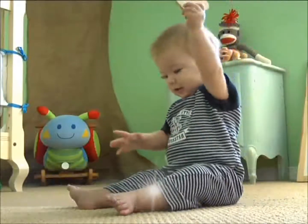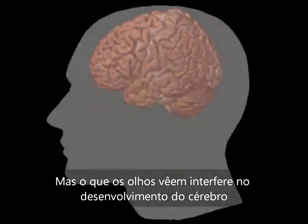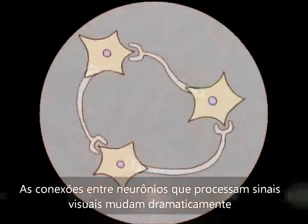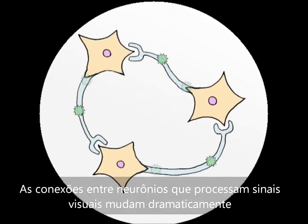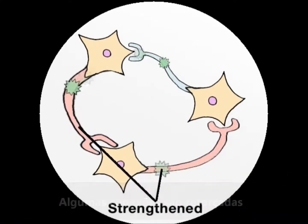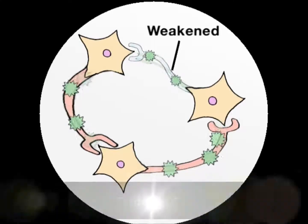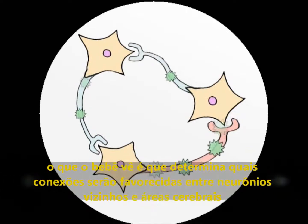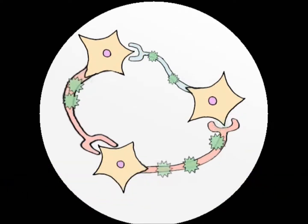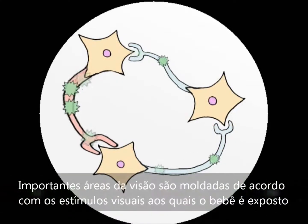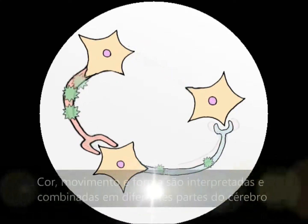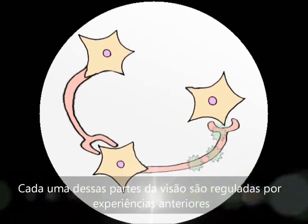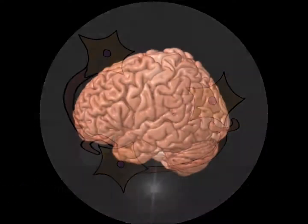During this time, not only is the brain learning to organize what the eyes see, but what the eyes see is in turn affecting the development of the brain. The connections between neurons that process visual signals change dramatically — some connections are strengthened and many less-used connections are broken. Which connections are favored depends on what the baby sees. Color, motion, and form are interpreted and combined in different parts of the brain, and each of these parts of vision are tuned by early experience.